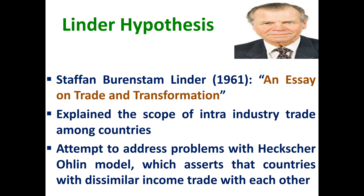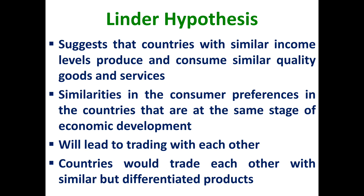The Linder hypothesis looks at one of the limitations of the H-O model, in which the factor endowment approach says that trade pattern will basically be between two entirely different countries — a capital-abundant country will trade with a labour-abundant country. But Linder, in his essay on trade and transformation in 1961, explained the scope of intra-industry trade among countries. He argues that the trade pattern will be more with countries with similar kinds of income and taste and preferences. It suggests that countries with similar income levels produce and consume similar varieties of products and services, with similarity in consumer preferences, leading to increased trade between them. And the trade pattern will be intra-industry as well.